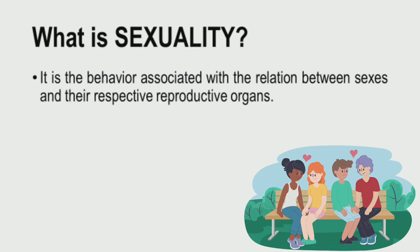We also have bisexual — those individuals who are attracted to both male and female, regardless of their own sex or sexual orientation, their attraction is directed toward both sexual classifications. Then lastly we have asexual — these are individuals who have little sexual excitement toward either sex, and who are not interested in entering into sexual relationships because they are not attracted to either sex.